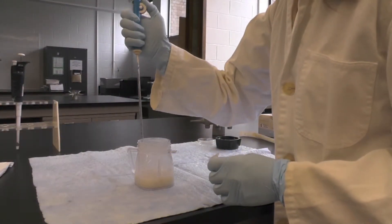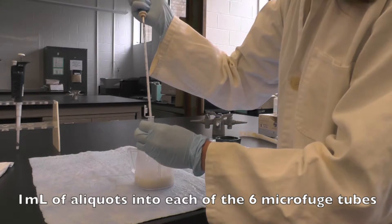Using a disposable transfer pipette, transfer 1 mL aliquots into 6 microfuge tubes.